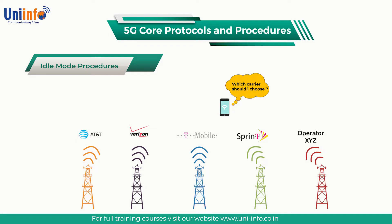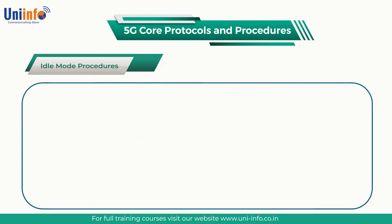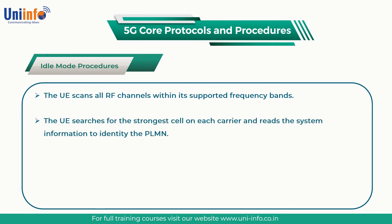The UE non-access stratum layer can request the UE access stratum to report available PLMNs. The UE scans all RF channels within its supported frequency bands. The UE then searches for the strongest cell on each carrier and reads the system information to identify the PLMN.